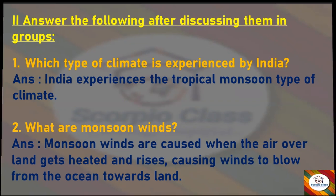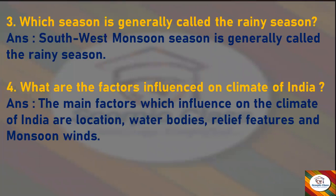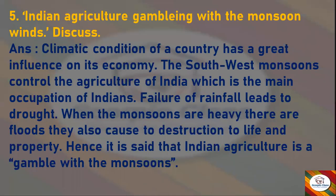Next question: which season is generally called the rainy season? Answer: the southwest monsoon season is generally called the rainy season. Next question: what are the factors that influence the climate of India? Answer: the main factors which influence the climate of India are location, water bodies, relief features, and monsoon winds.